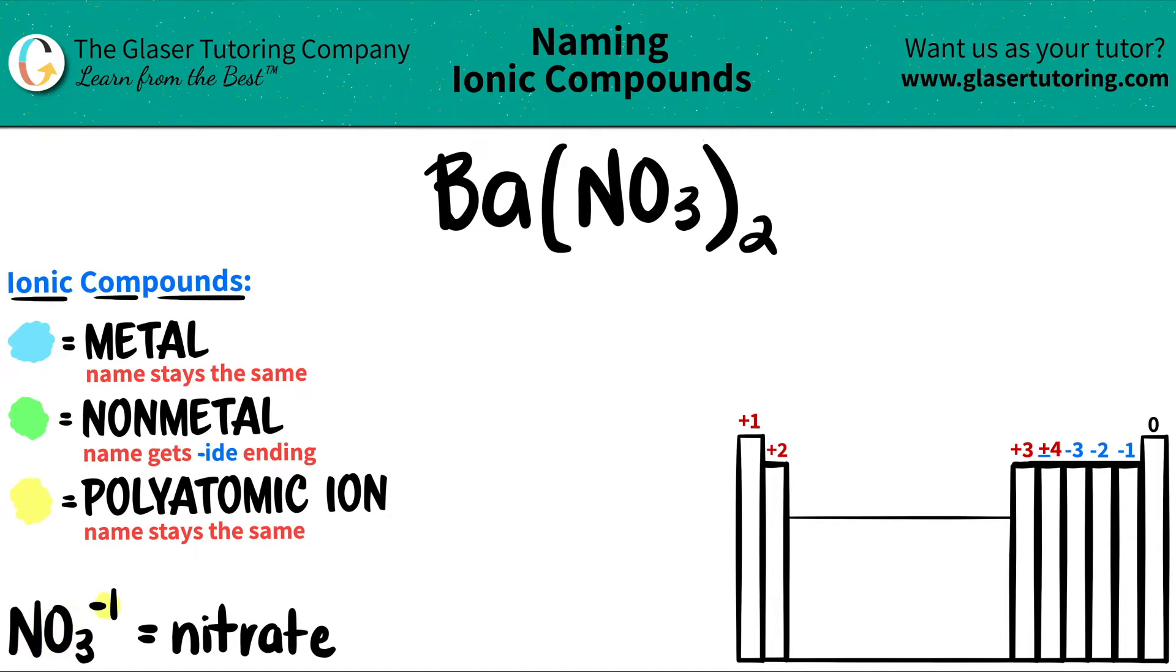NO3, which is always a negative one charge, is always called nitrate. And here it is right here. So we have the polyatomic nitrate here, NO3.